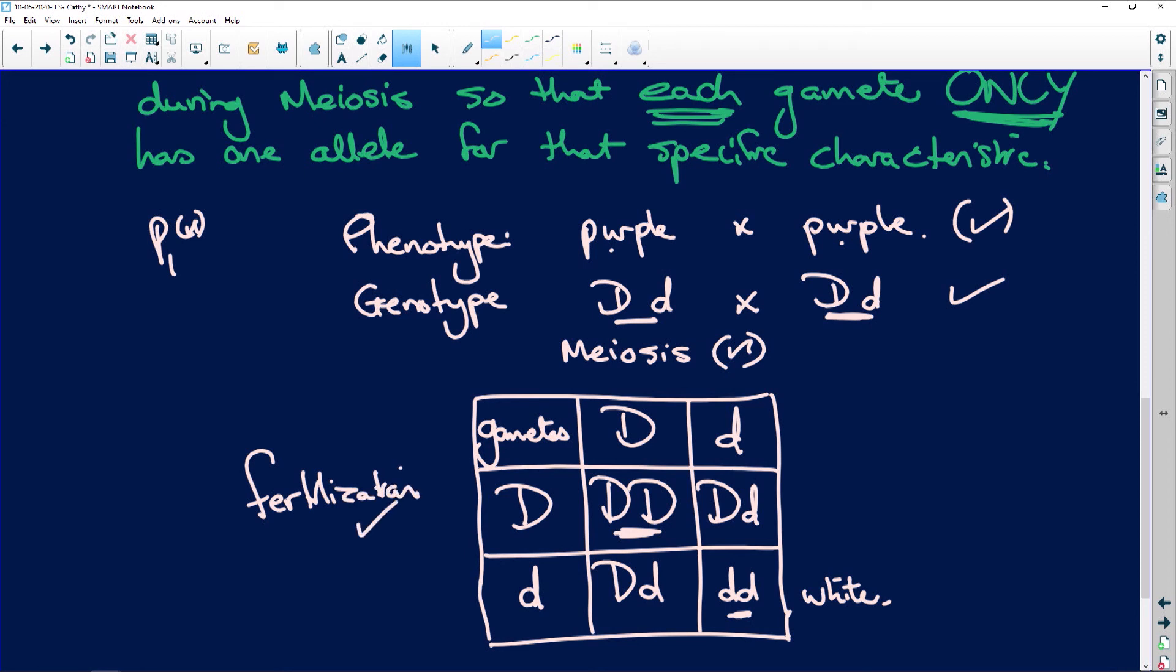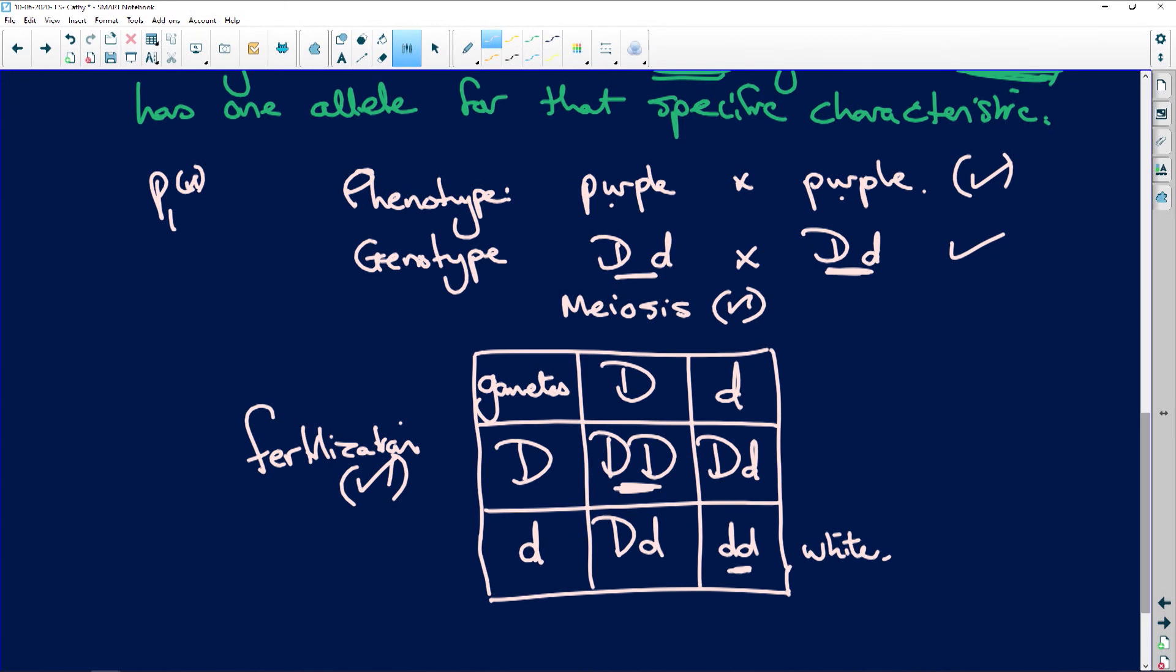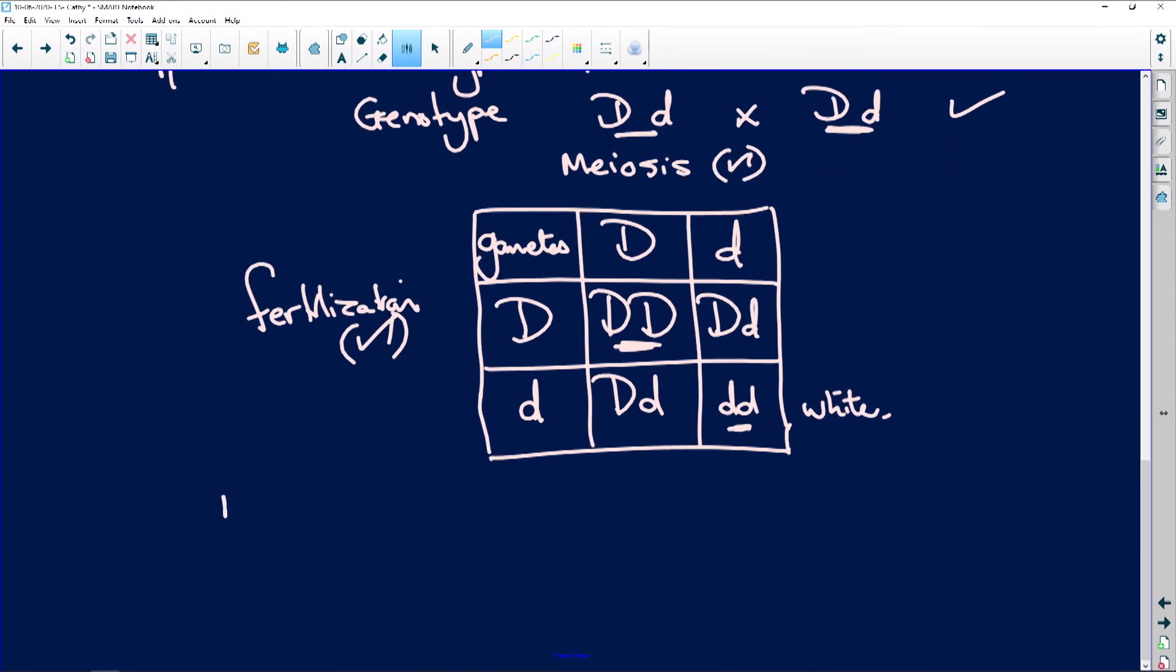And just for writing that word, you're going to get half a mark. Now, what is our result? Our F1, which means our first filial generation. The genotype is here. So, we can write it out. The genotype, because the genotype is going to tell us what the phenotype is. The genotype is going to be one DD, two capital D small d, one small d small d. And then the phenotype. The phenotype is going to be three purple. Because that's what you're going to see. Remember, phenotype is what you see, guys. This is what's in the genes. And this is what you see.